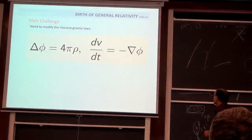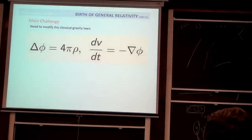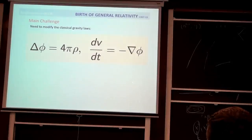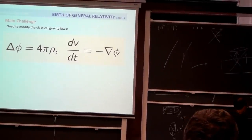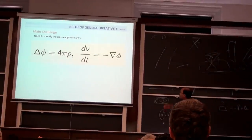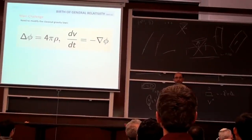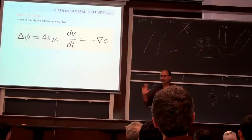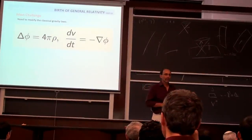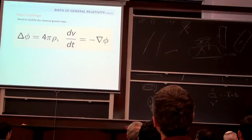Naively, you might want to replace the Laplacian with the wave operator — the Lorentz-invariant version — but this is just a Lorentz-invariant equation while the other one is not. You might want to replace V with the four-velocity V^α, but of course putting these together doesn't work out — nothing came out of these naive attempts. It was really a big puzzle how to make this system work.